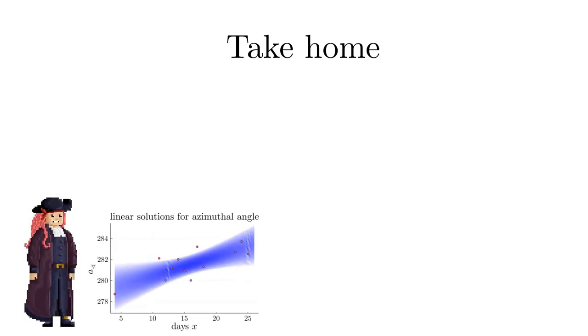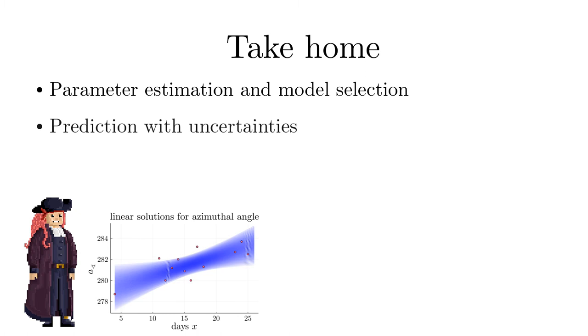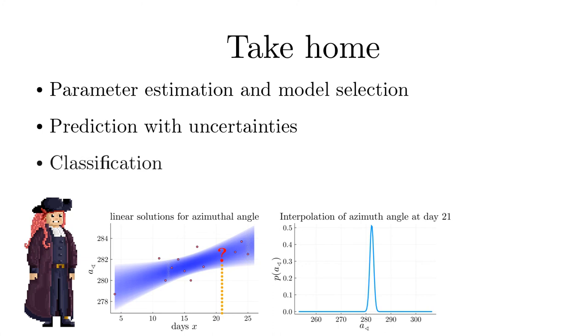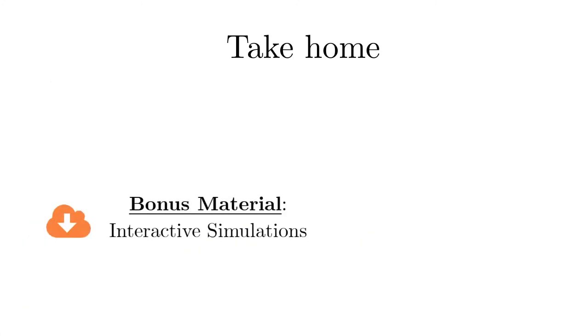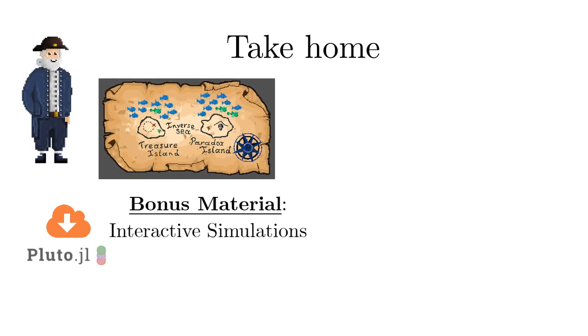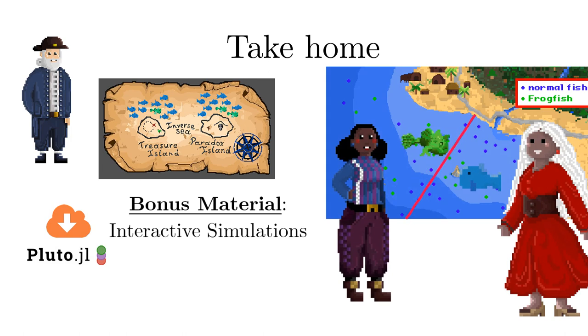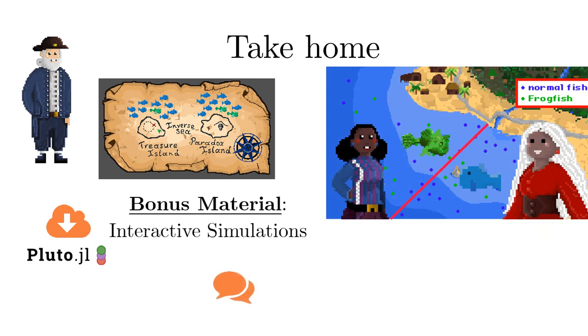This concludes unit 7. We have learned Bayesian regression and how to apply it to parameter estimation and model selection. We learned also how to predict unseen measurement values and their probabilities and we got insights into classification of data. Now it's your turn to actually find Captain Venn's treasure in the Pluto notebooks. Please feel free to ask questions in the forum and feel encouraged to test your knowledge in the quiz.